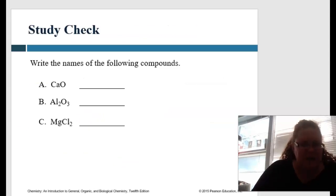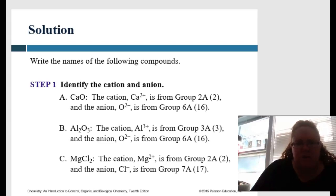So pause me for a sec, and let's practice these guys. So first we're going to be identifying the cation and anion. The cation, calcium, and the anion, oxygen. Cation, aluminum, oxygen. Magnesium, chlorine.